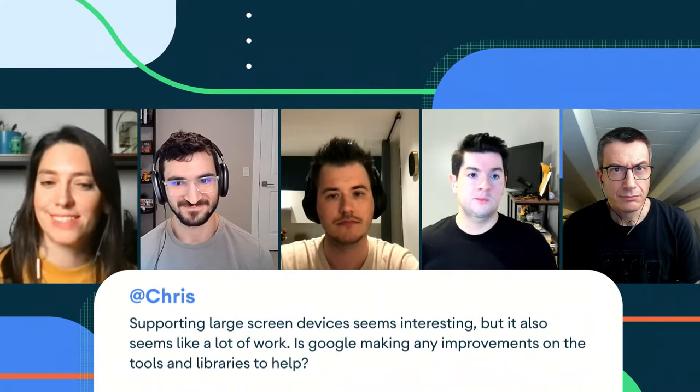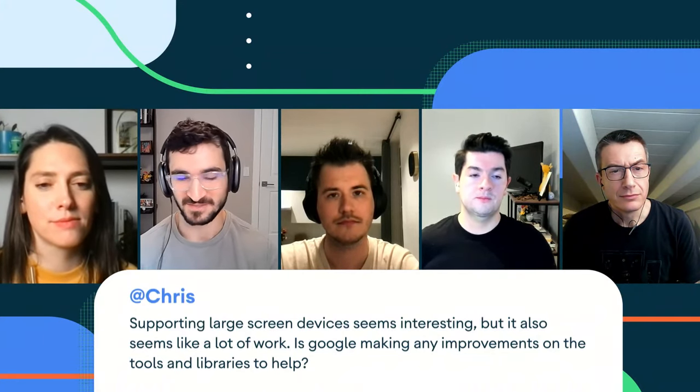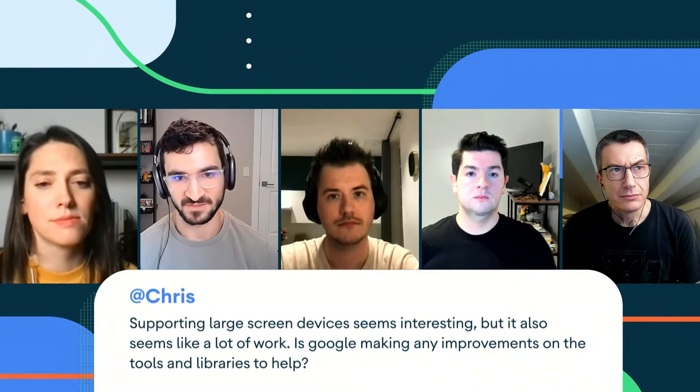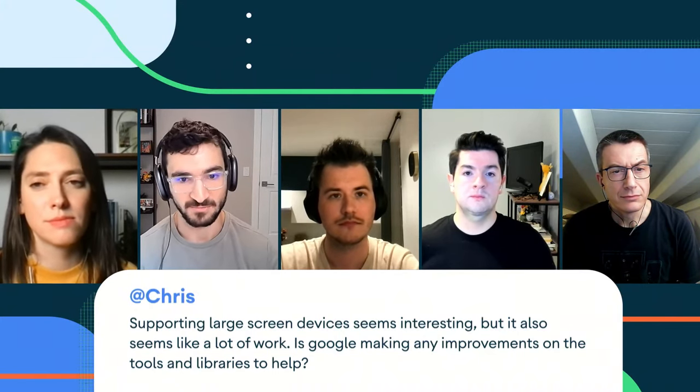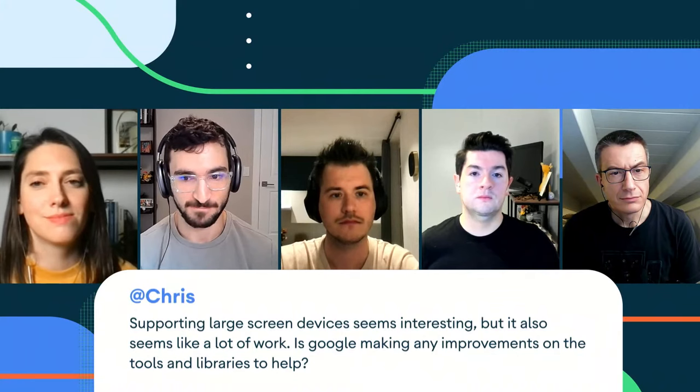Supporting large screen devices seems interesting, but also seems like a lot of work. Is Google making any improvements to the tools and libraries to help? We're doing a lot of work. One of the things coming with 12L is a new activity embedding feature that makes it easier for developers with multi-activity application architectures to create large screen and multi-panel optimized layouts with their existing code with very little new code — it's mostly configuration driven. Similarly, with Compose, we have a mature interop model so you can take existing Views code and embed Compose layouts or vice versa, letting you incrementally update and modernize your code over time. I'll hand it off to Pietro to talk about some of the Jetpack library work with Window Manager.